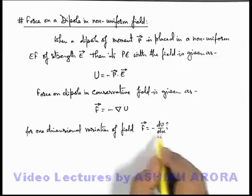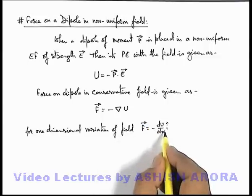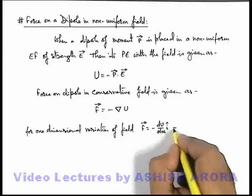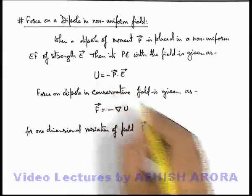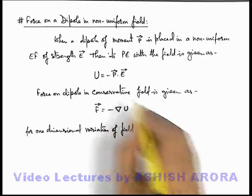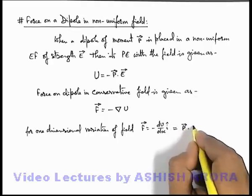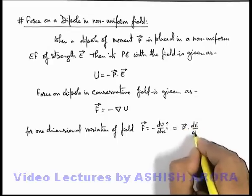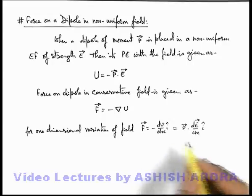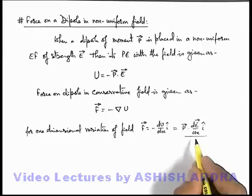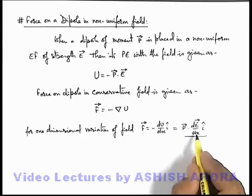Just be careful here — it gives us the component of force in the direction along the x-axis only. So when we substitute the value of U here, it can be written as d/dx of minus p E, and here the minus gets cancelled out. Since p is a constant, we can write p dot d(E)/dx î. Be careful that this is giving us the direction of force along the x-axis only; any other component we are not calculating using this.